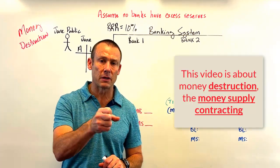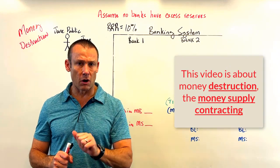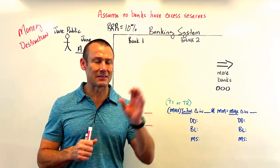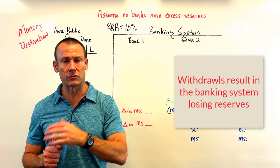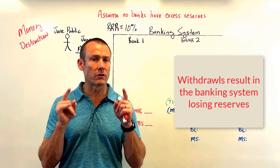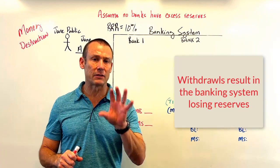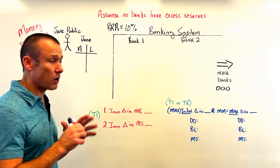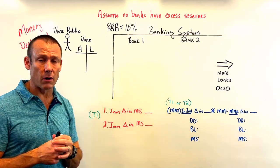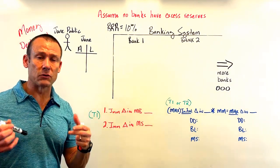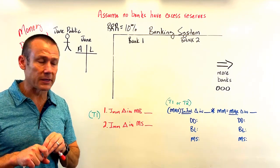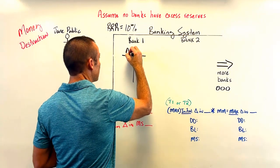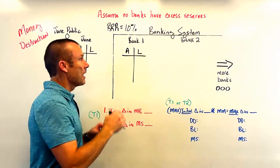The big thing to understand when we study a withdrawal is that the banking system is losing reserves. Under a limited reserve framework, that can lead to money destruction. We've got Jane making a withdrawal from Bank 1, and we need to understand balance sheets using T-charts with assets on the left and liabilities on the right.